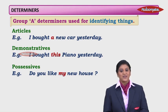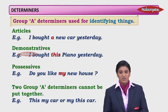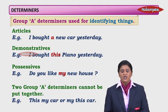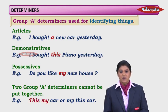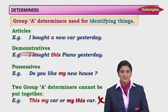Here is a very important point about group A determiners: two group A determiners cannot be put together. For example, 'this my car' or 'my this car' — neither makes sense, and thus we cannot use two group A determiners together.